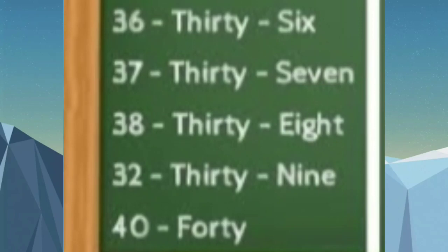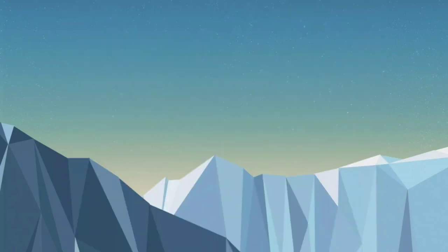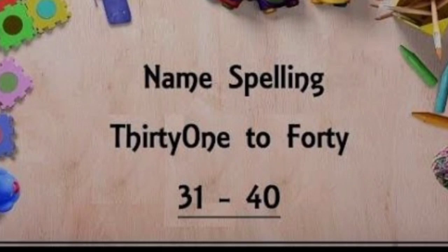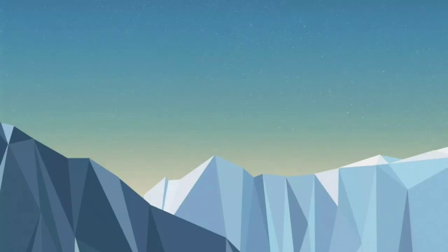And the last one is 40. What is the spelling of 40? F-O-R-T-Y — 40. You have to learn it carefully, because it is a new spelling. F-O-R-T-Y — 40. F-O-R-T-Y — 40. So children, please learn the number names 31 to 40. Thank you for today.